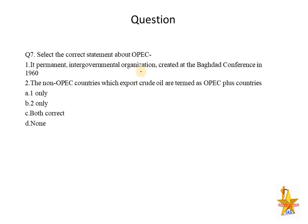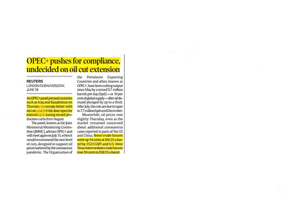The last question is about OPEC — Organization of Petroleum Exporting Countries. OPEC is a permanent intergovernmental organization, essentially a cartel of oil-exporting countries. It was established in 1960. OPEC+ is an important group that includes non-OPEC oil-exporting countries as well. The current affairs news is about OPEC pushing for compliance and deliberating on extending oil production cuts.